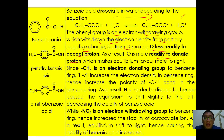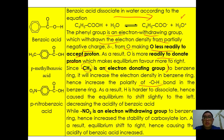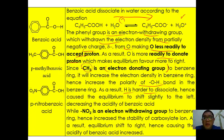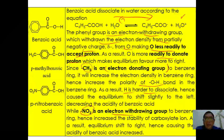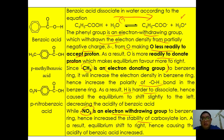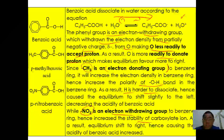Since CH₃ is an electron-donating group to the benzene ring, it increases electron density in the ring, increasing polarity of the O–H bond and making H harder to dissociate, so equilibrium shifts slightly to the left, decreasing the acidity of benzoic acid. In contrast, NO₂ acts as an electron-withdrawing group, increasing stability of the carboxylate ion, shifting equilibrium slightly to the right and increasing acidity compared to benzoic acid.